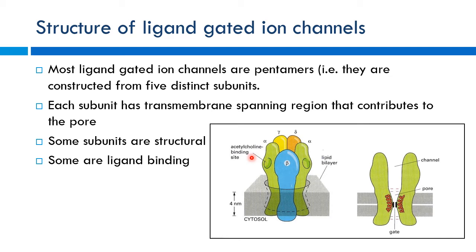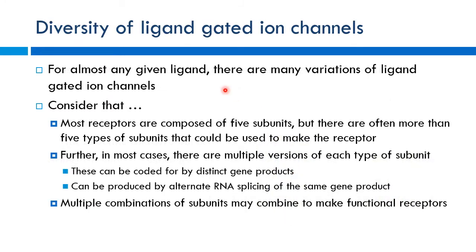Pharmacogenetics — how someone's genes affect drug response — is relevant here. People may have different polymorphisms that change subunit structure, explaining why some people respond really well to a drug while others don't. The type of subunits you have is determined by what genes are being encoded and transcribed in the nucleus, producing different RNA and ultimately different proteins.